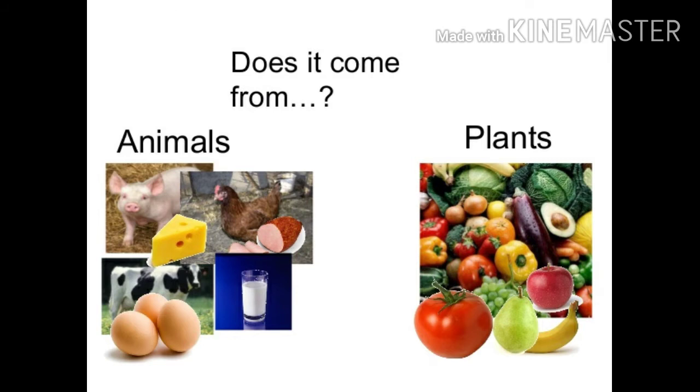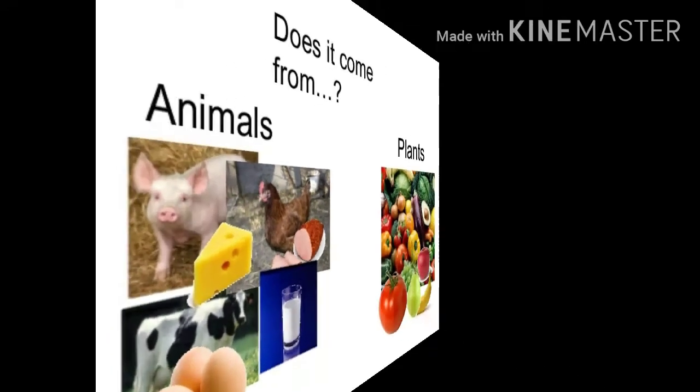Cheese, milk are come from animals. So these are called animal products. Let's learn some examples of plant and animal products.